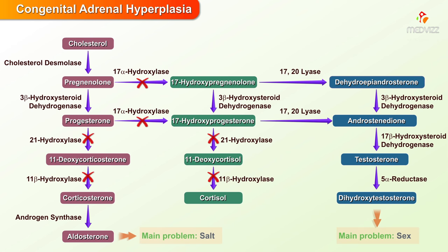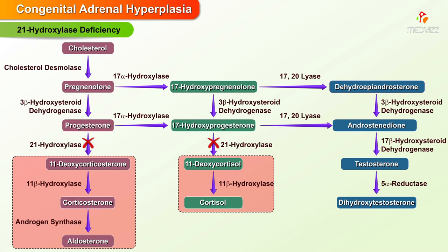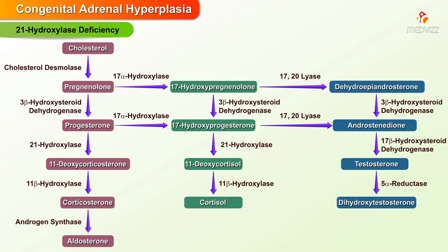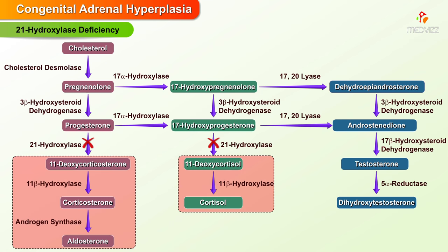The main problems are salt and sex. 21-hydroxylase deficiency: this enzyme is responsible for the synthesis of aldosterone and cortisol. Deficiency leads to decrease in aldosterone, decrease in cortisol, and increase in androgens.